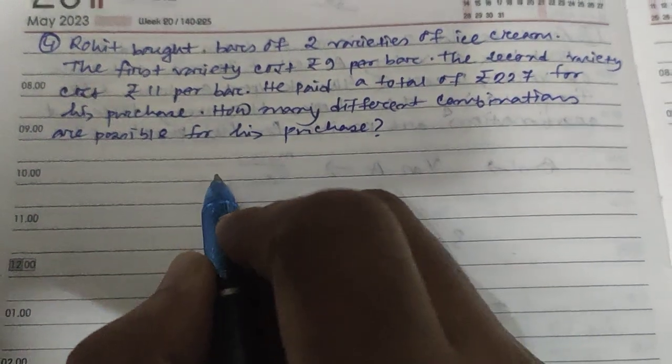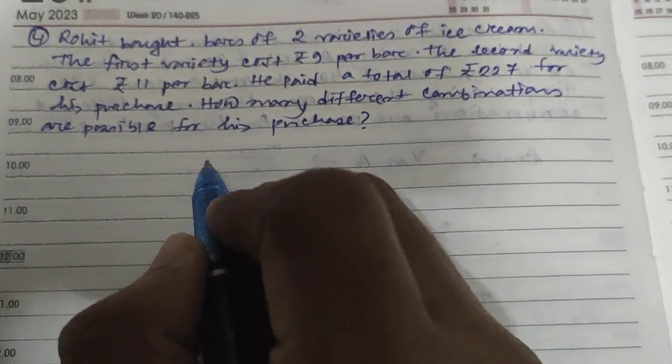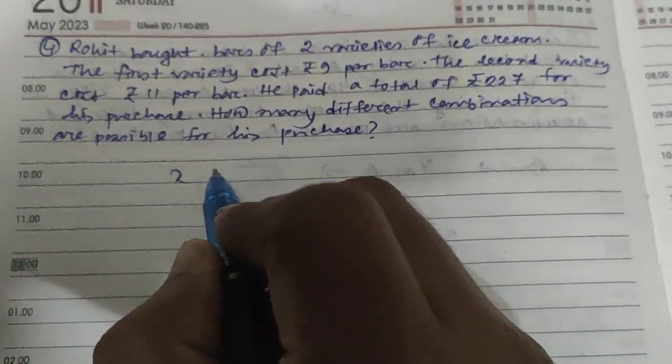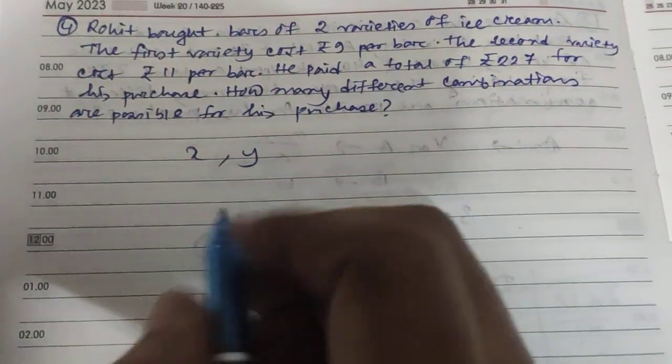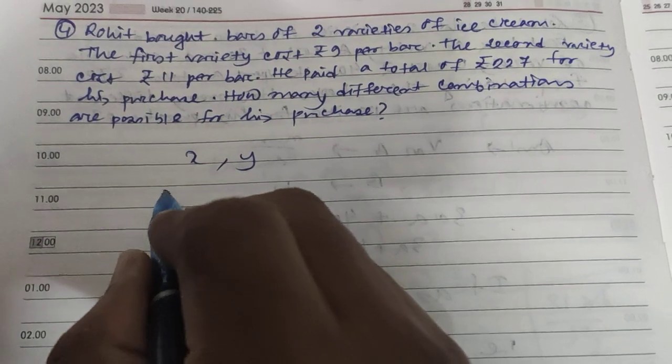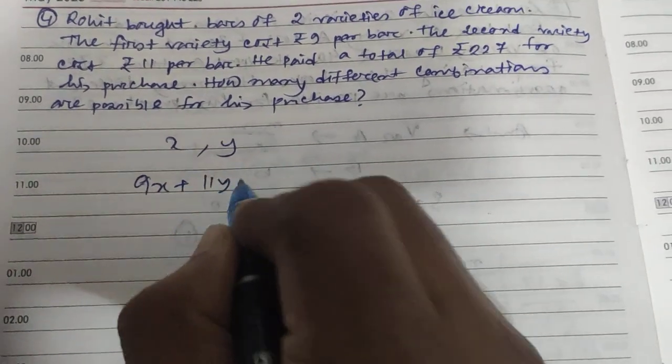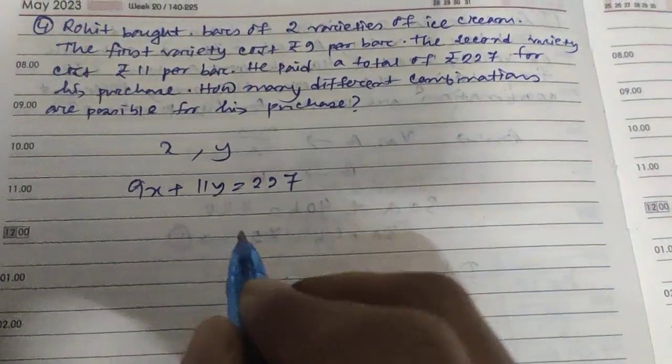So suppose we are taking X and Y, first bar and second bar respectively. The first price is 9, so 9X plus 11Y equals 227.